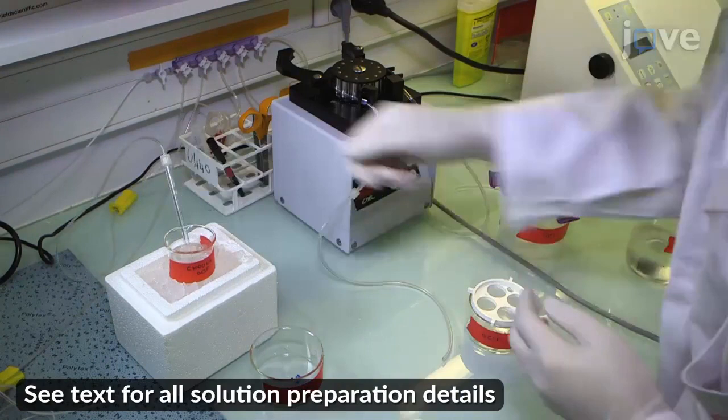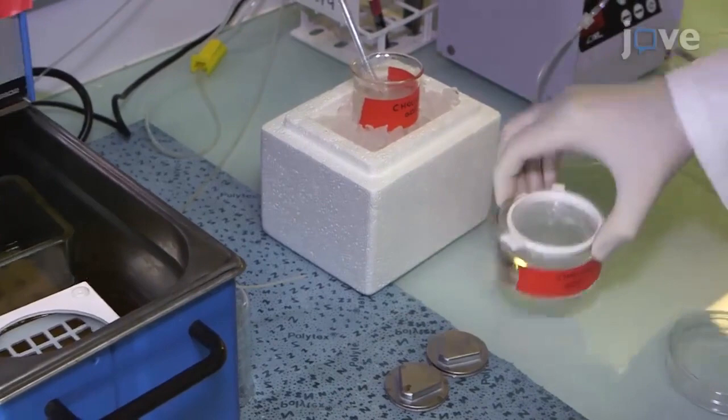At least 30 minutes before the dissection, start bubbling 70 milliliters of choline artificial cerebral spinal fluid, or choline ACSF, on ice. Add 150 milliliters of choline ACSF at 32 degrees Celsius with carbogen.